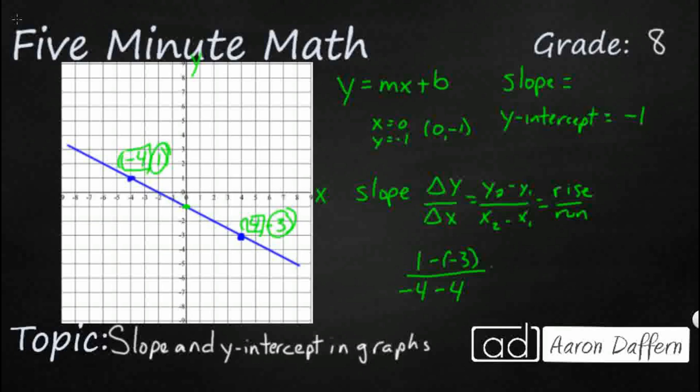So what we have here is we have one minus negative three. So remember, two negatives make a positive. So really, it's one plus three. And that is going to be negative four minus negative four. It's going to be negative eight, right?